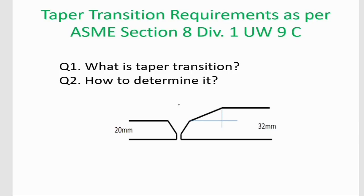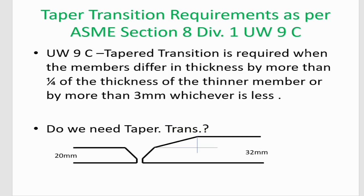Hello guys, welcome to my channel. Today's topic is about taper transition, and in this lesson I will go through what taper transition is and how to determine it. Taper transition is required when materials of two different thicknesses need to be joined by welding. It is a process of converting the thickness of the thicker member to match with that of the thinner member.